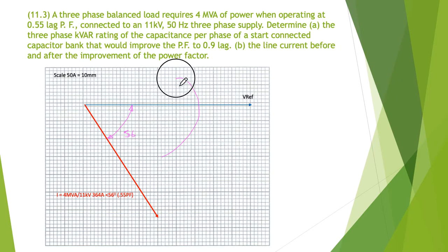It also told us it was lagging, so don't forget it said lagging. There's my 56 degrees and my direction of rotation anti-clockwise making that lagging. The next step is to put in the phasor at the 0.9 where we'd like to get to.